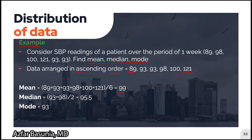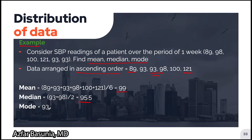To calculate the median, since we have an even number of data points, we take the middle two values, add them up, and divide by two, giving us 95.5. To get the mode, note that 93 appears twice in the data set — more than any other value — and thus our mode is 93.